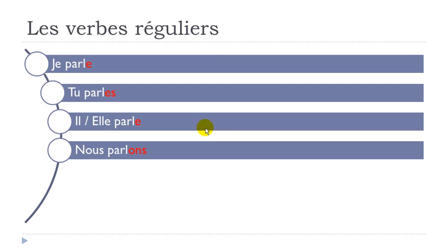For NOUS, we'll have the classical ending, and it will be O-N-S. It's classical because you will see with the other groups as well, it's quite common to have this ONS for NOUS. NOUS PARLONS — remember the final S is not pronounced, and then O-N together gives you the sound ON. NOUS PARLONS.